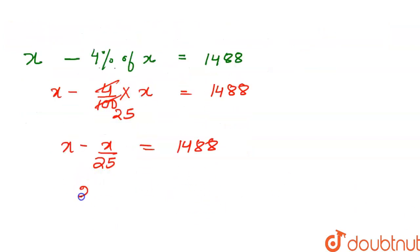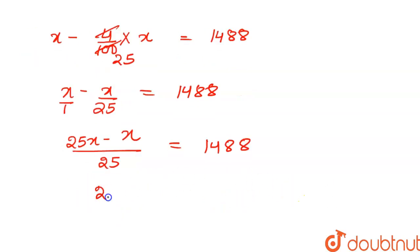And this will become 25. We are taking LCM. So 25 here. So you can say that 1 into 25 will be 25. So 25x minus, what should you multiply to 25 to get 25? It should be multiplied by 1 only. So we have to multiply 1 here also, that means x.